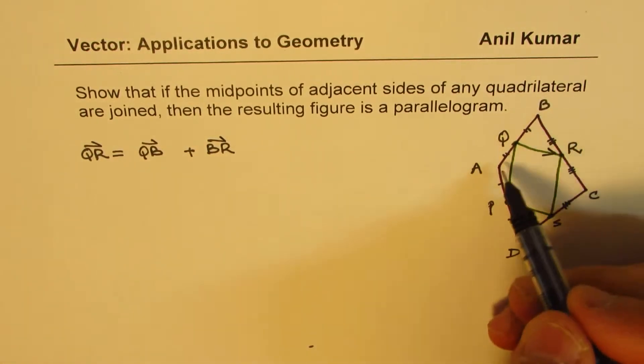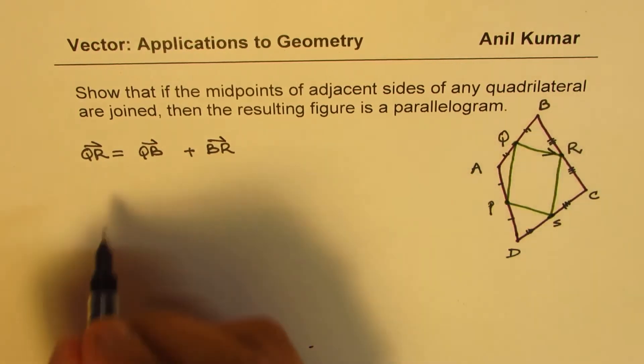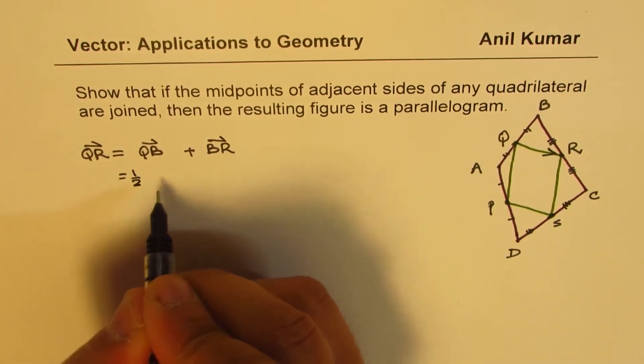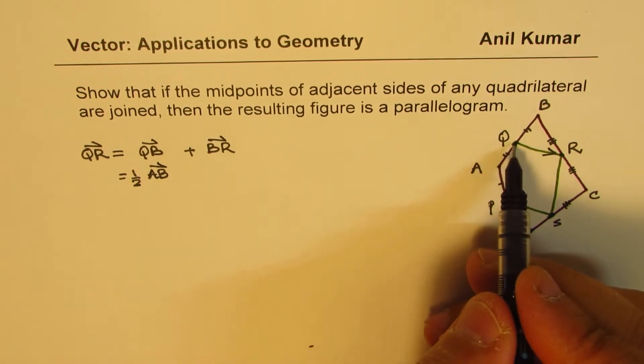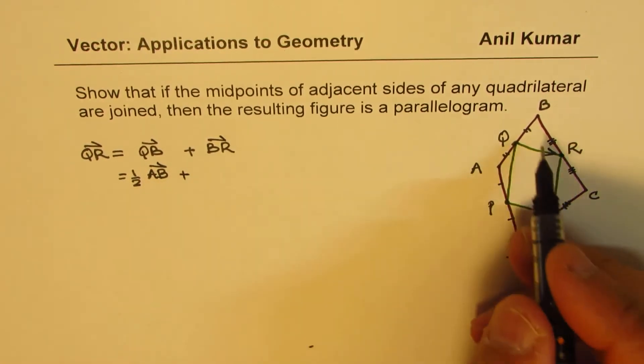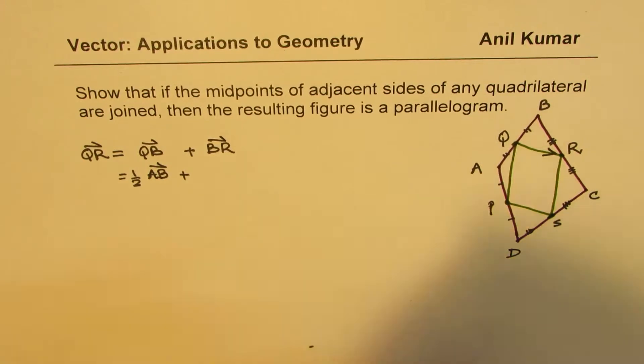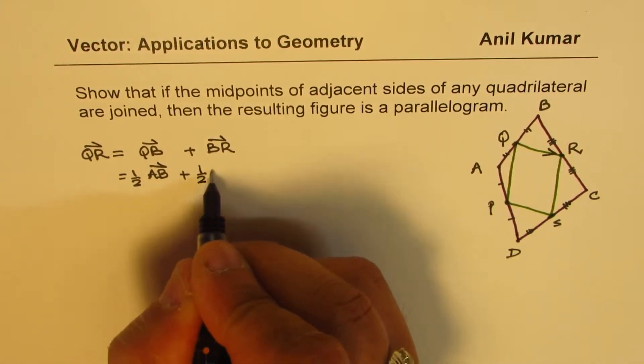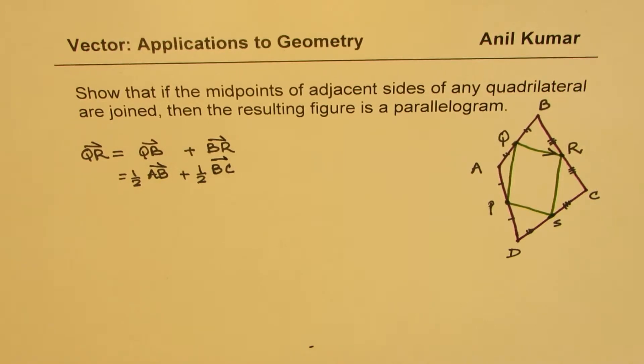Now, Q, B could be written as half of A, B. So Q, B is half of A, B, since we know Q is the midpoint, and B, R is half of B, C.